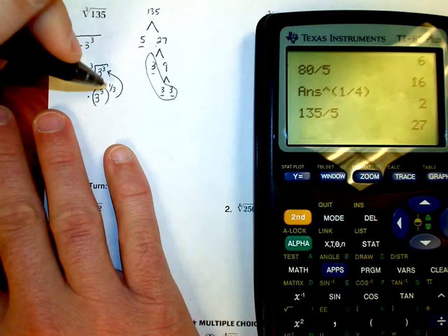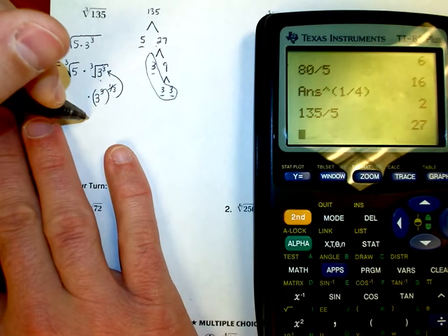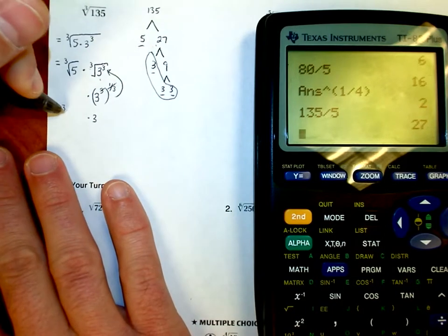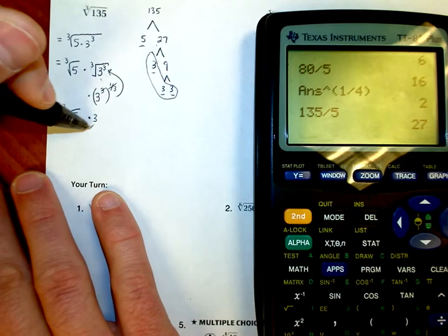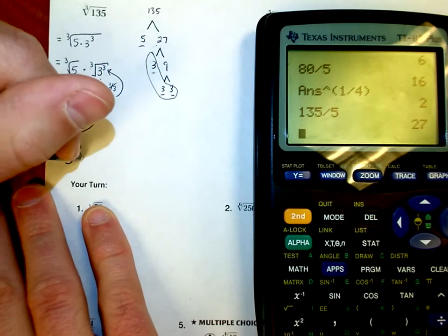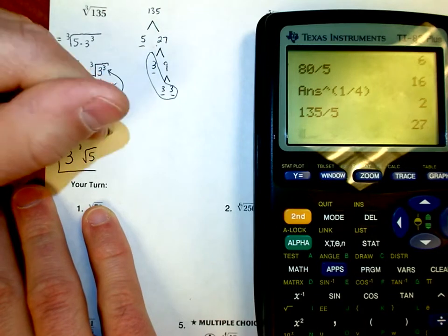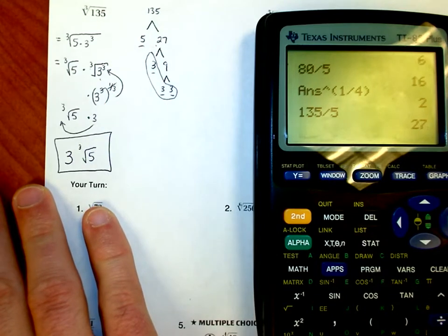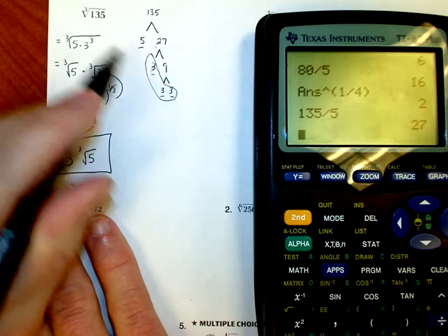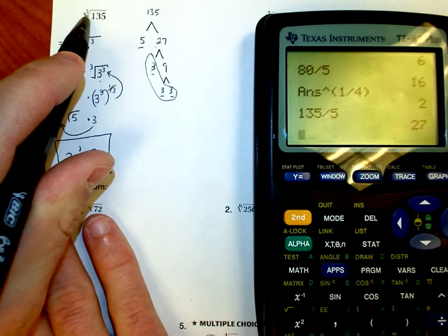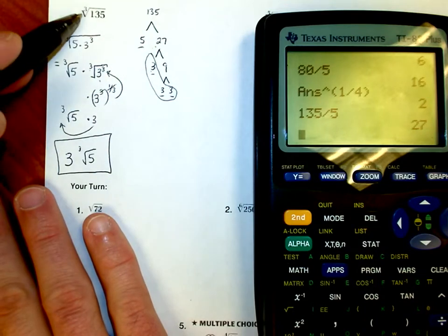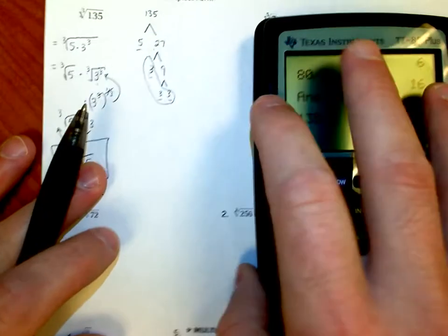Those exponents multiply out to 1, so that piece is simply 3. What I have then is the cube root of 5 times a 3, and we move that out front: 3 times the cube root of 5. That is the simplified version. We used a group of 3 because we had a cube root. So if we had a 4th root or a 5th root, we'd be looking for groups of 4 or 5 in order to pull them out — the group size has to match the root index.